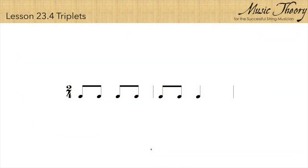You know that in simple meters like 2-4, the beat is evenly divided into two equal parts, and in 2-4 that might be counted 1 and 2 and.